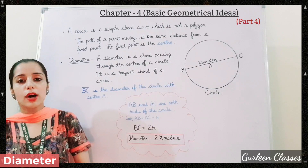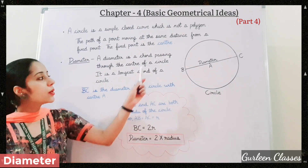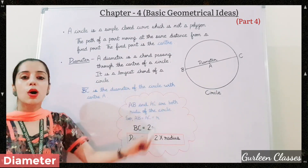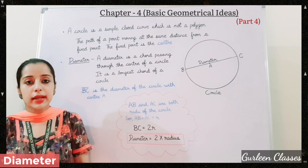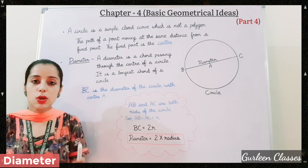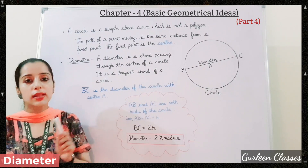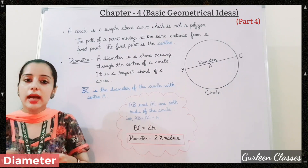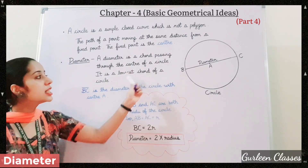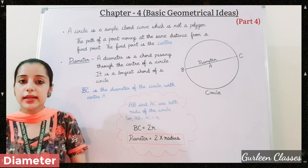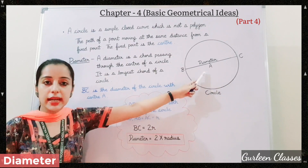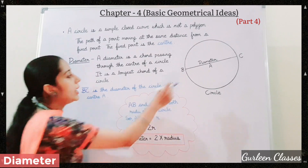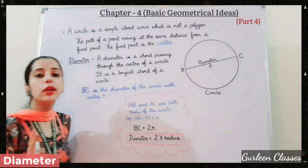Next, diameter. A diameter is the chord passing through the center of a circle. Here, BC is the diameter of the circle with center A. It is the longest chord of the circle. A chord is a line segment joining any two points on the circle, and when a chord passes through the center of the circle, it is called the diameter. Center is A, and a chord passing through the center is the diameter, with AB and AC being the two radii of the circle.